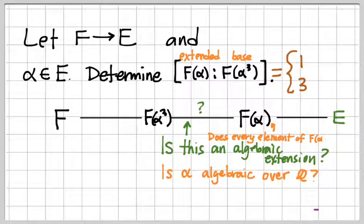Let's say is a root of some polynomial over the base field. In this case, our base field is f adjoin alpha cubed. So the only element that we might not know is algebraic over f alpha cubed is the only element that we suspect might not be already a part of f alpha cubed, namely alpha itself.